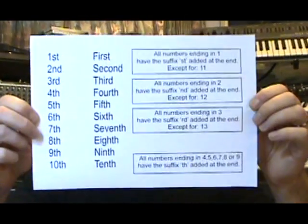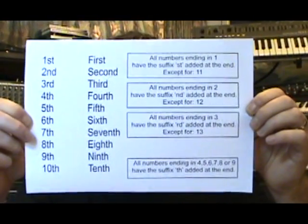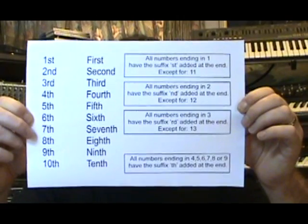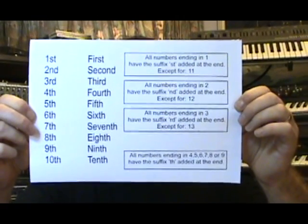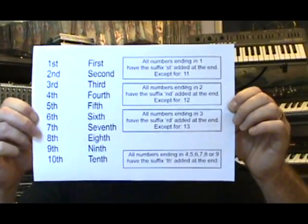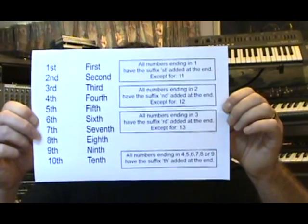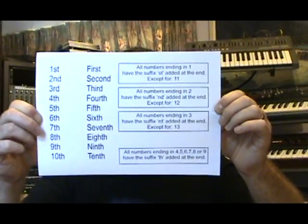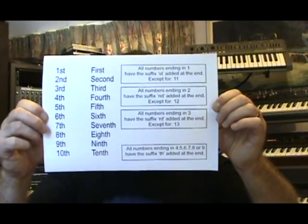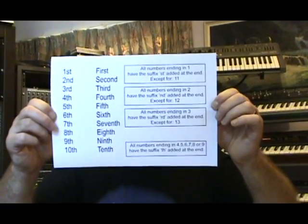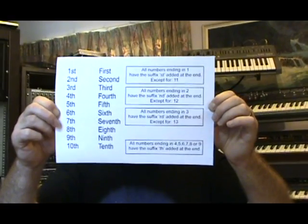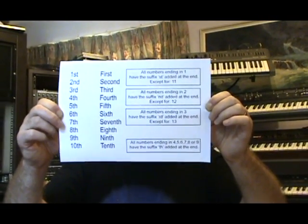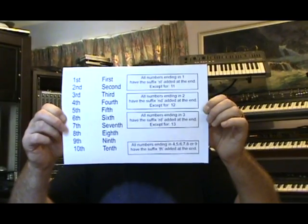This also applies to ordinal numbers. As you can see on this piece of paper, whenever a number ends in 1 it takes an '-st' suffix — so first, 21st, 31st — except for number 11. When something is in second place, like second, 22nd, 32nd, it always ends in '-nd' except for the number 12. And when something is 3rd, 23rd, 33rd, it ends in '-rd' except for the number 13.